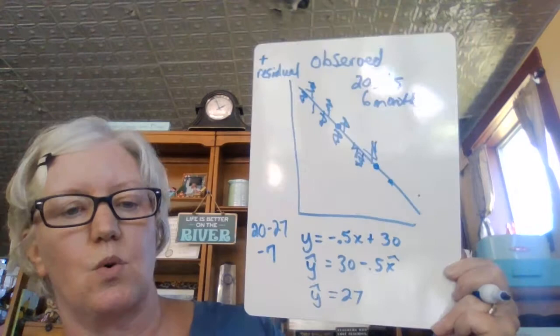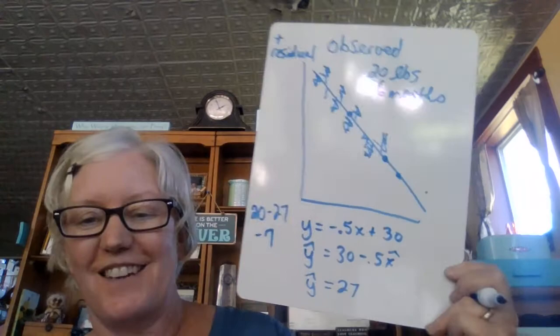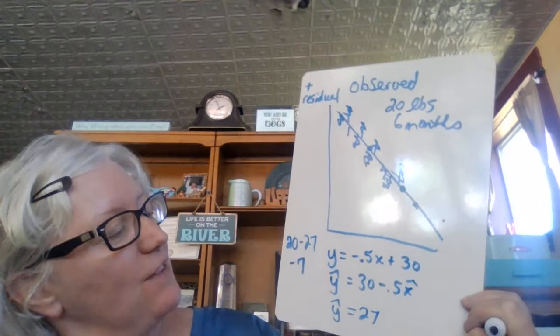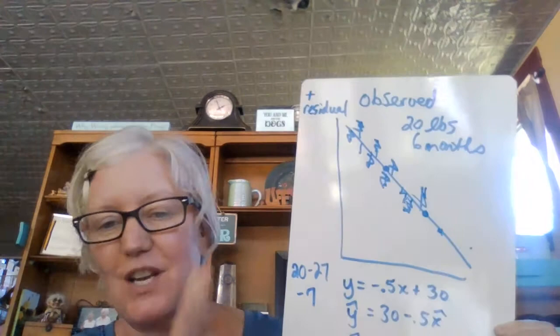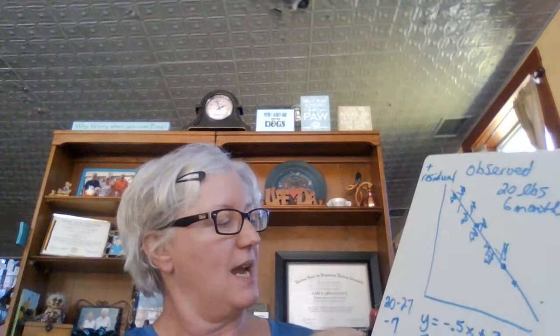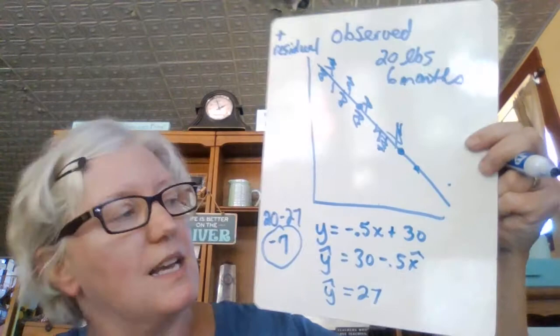That wasn't a very good example since I literally made the numbers up without thinking about it. What I really wanted to show was how to calculate the residual. If you end up with a negative residual, there should be more numbers above the line — but anyway, the residual is negative 7. What I want you to understand is how to calculate the observed minus the predicted and how to draw these residuals.